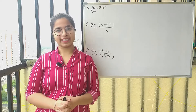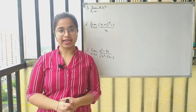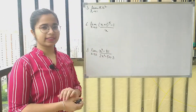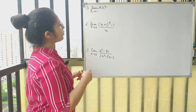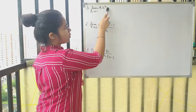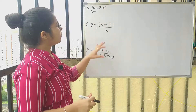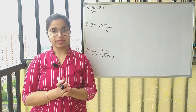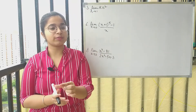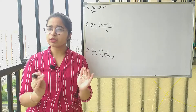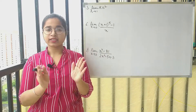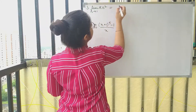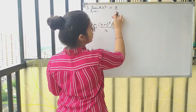We will begin with Exercise 13.1, starting with the third question. In this question, we have to find the limit of πr² as r tends to 1. We will use the algebra of limits: if we have a constant term multiplied in a function, we can write it as the constant into the limit of the function. Since π is a constant, it can come out.